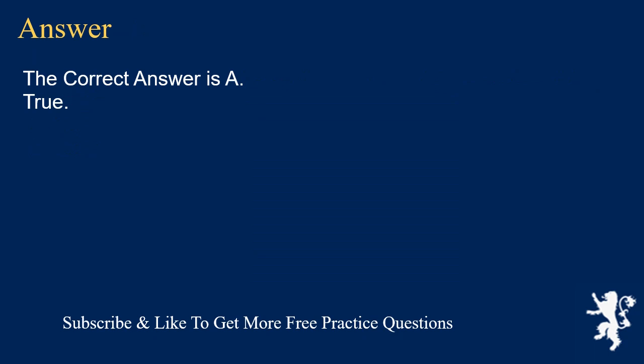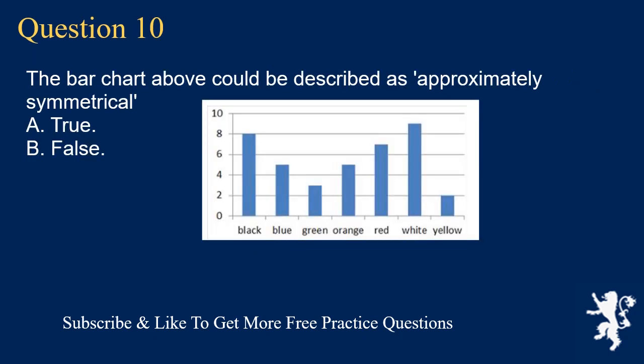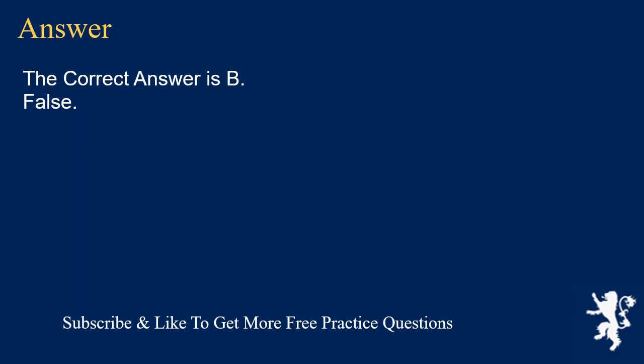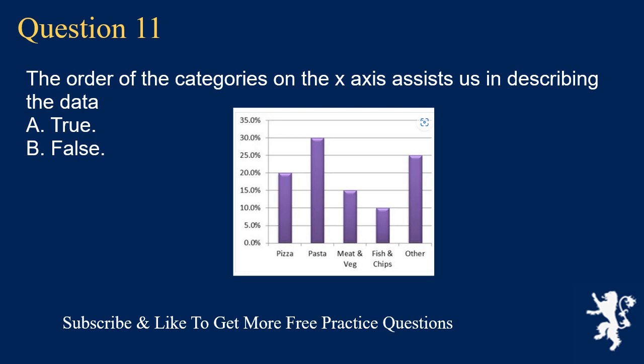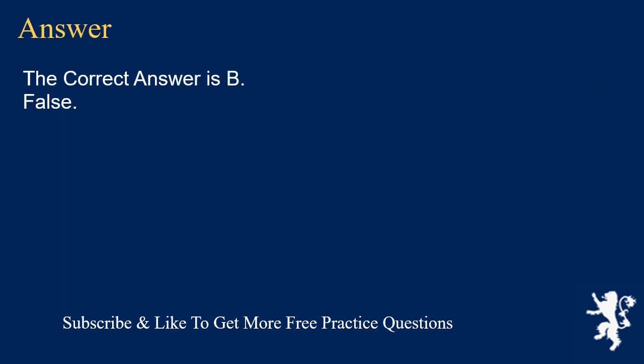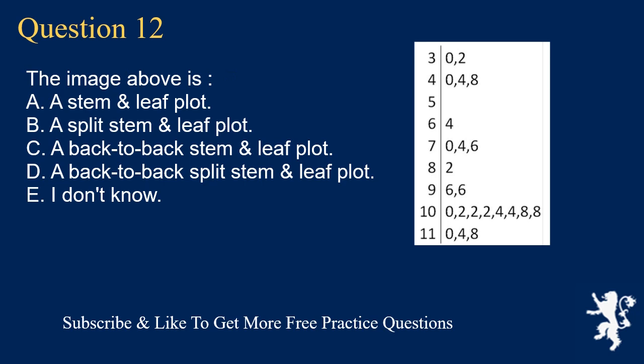The correct answer to Question 9 is A, true. Question 10: The bar chart above could be described as approximately symmetrical. A. True, B. False. The correct answer is B, false. Question 11: The order of the categories on the x-axis assists us in describing the data. A. True, B. False. The correct answer is B, false.